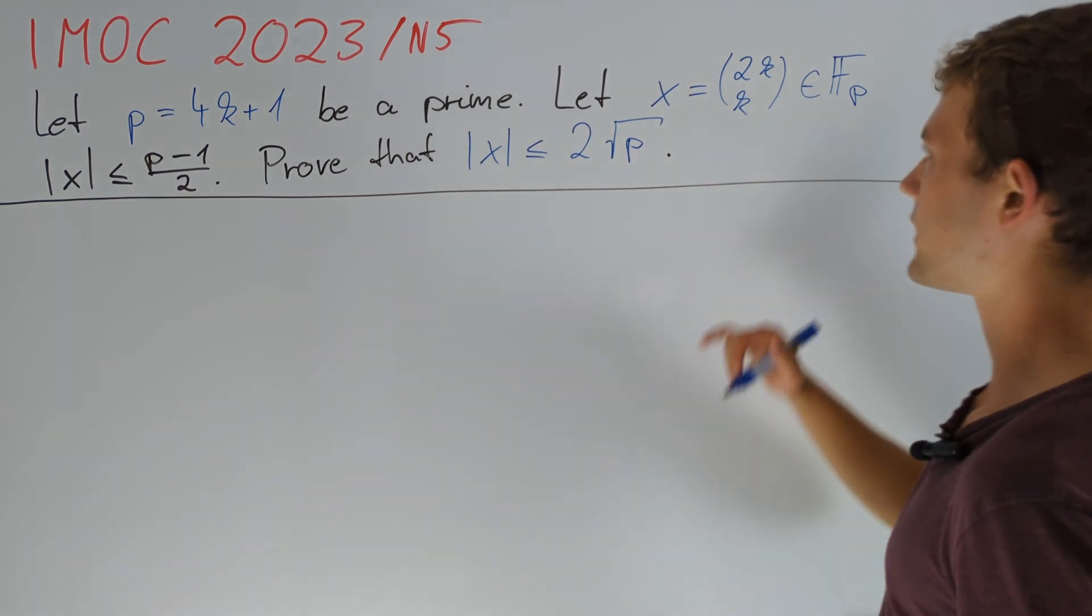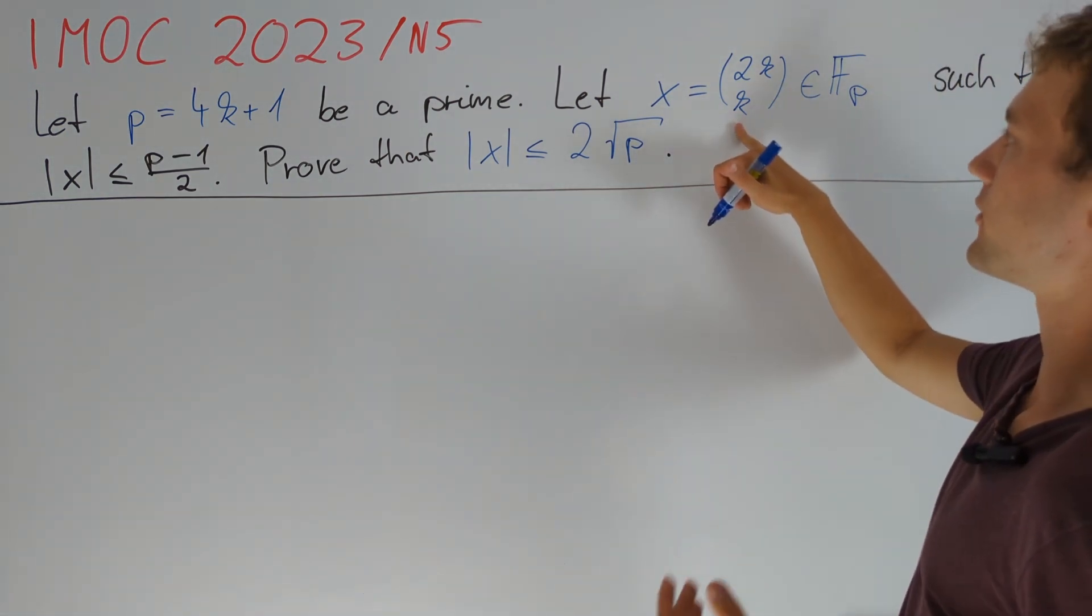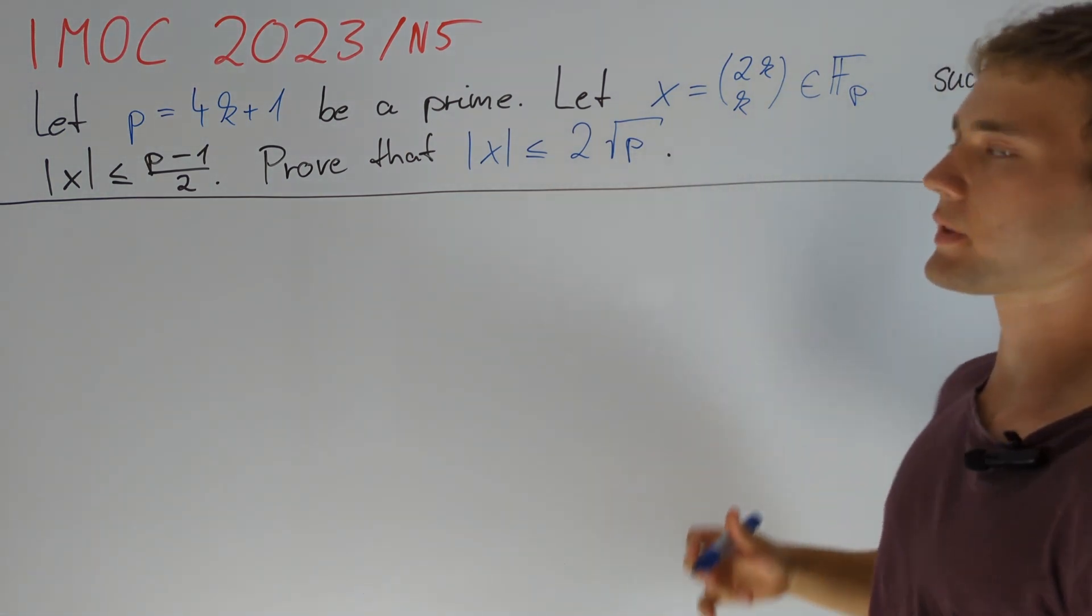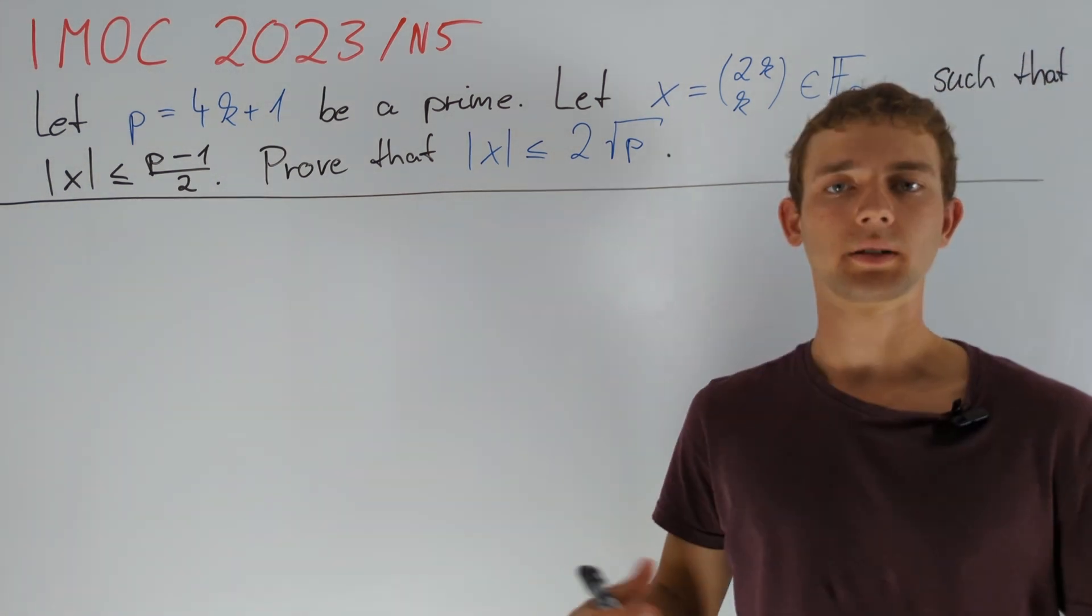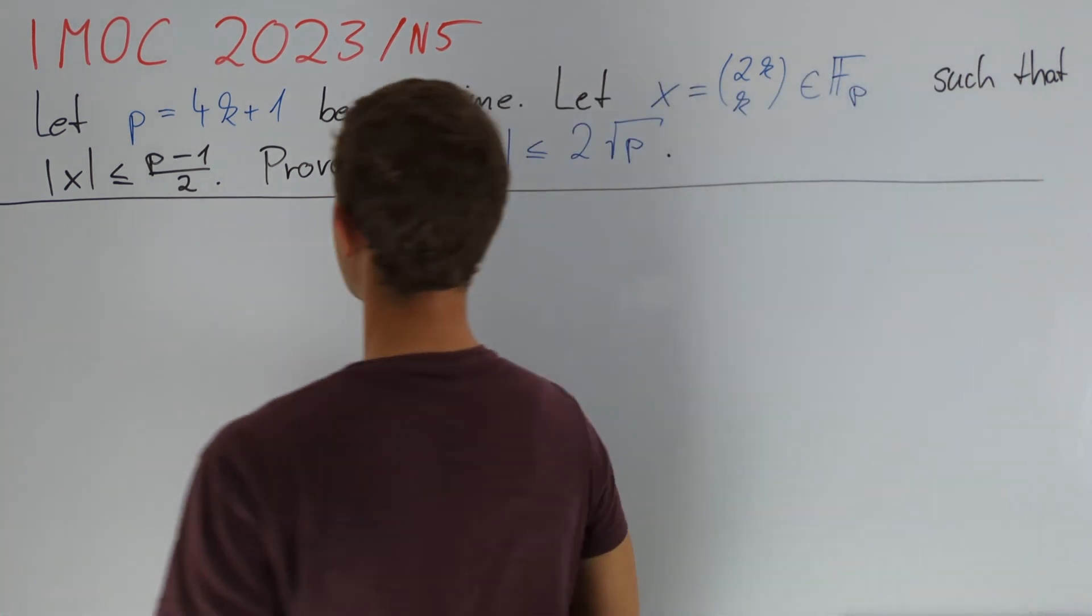Since it is not clear how to find a relationship between 2k choose k modulo p, we will spend the first chapter finding a new representation for x. We want to start with using the binomial formula.